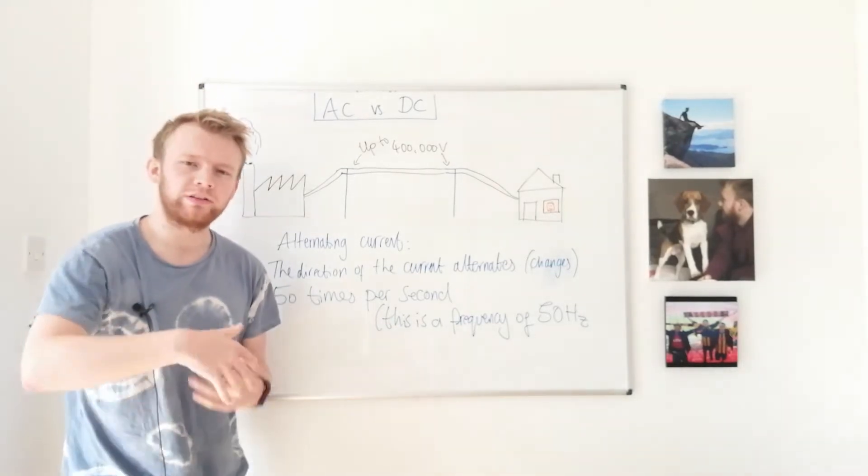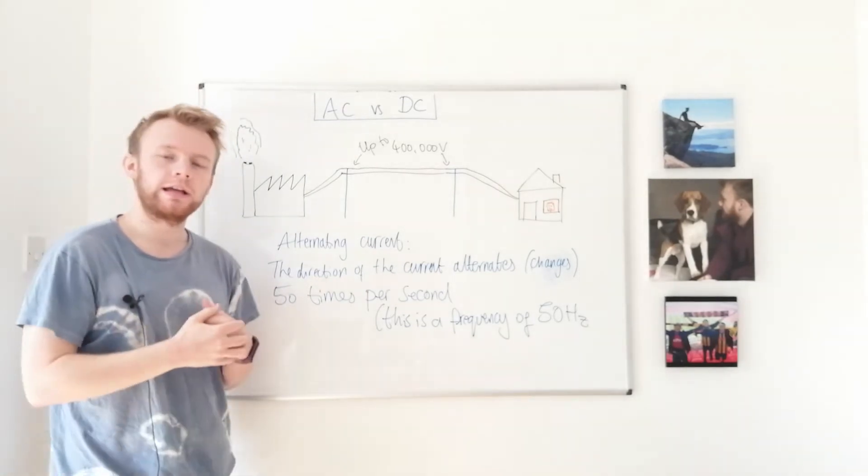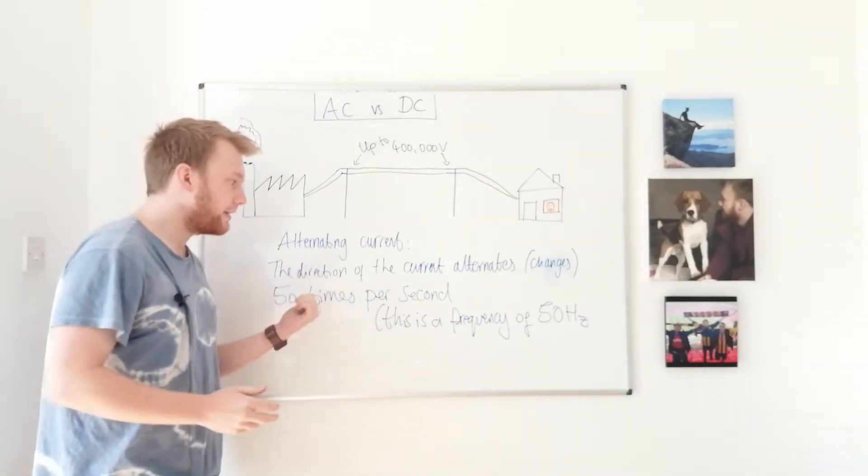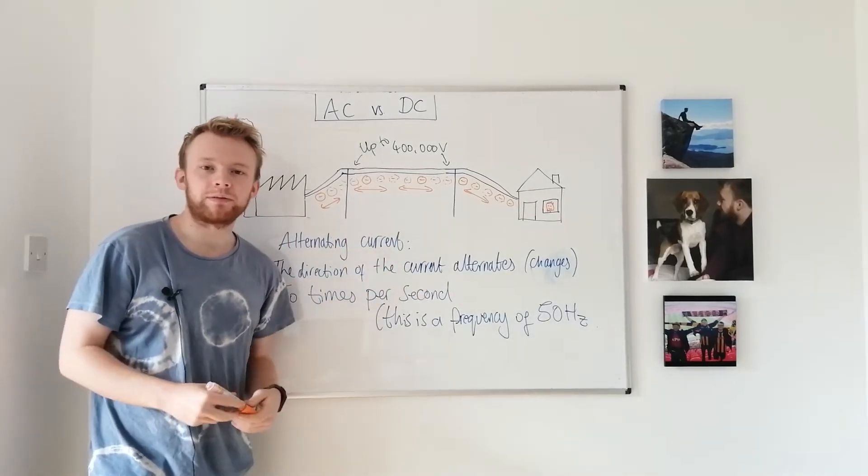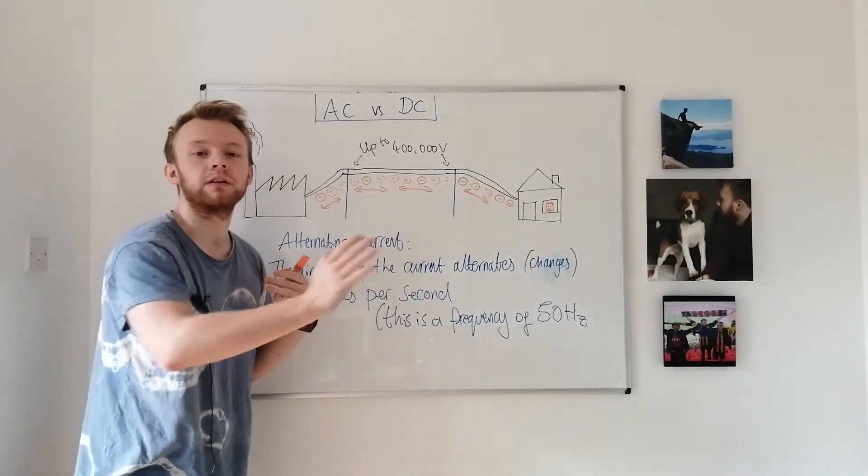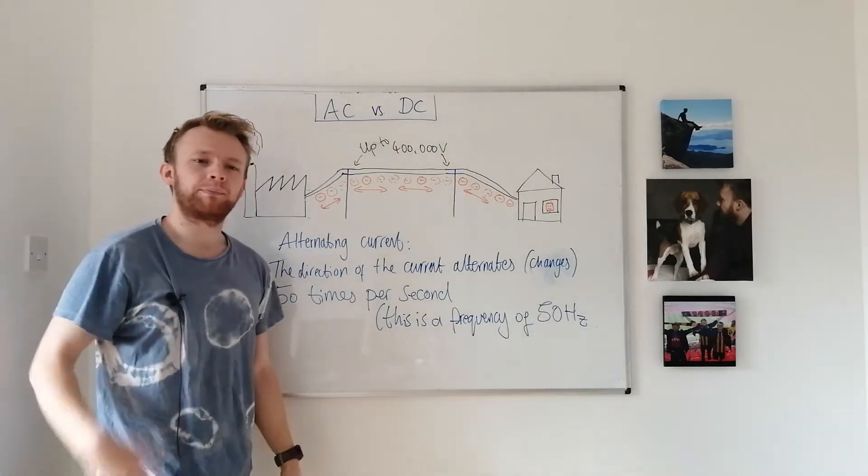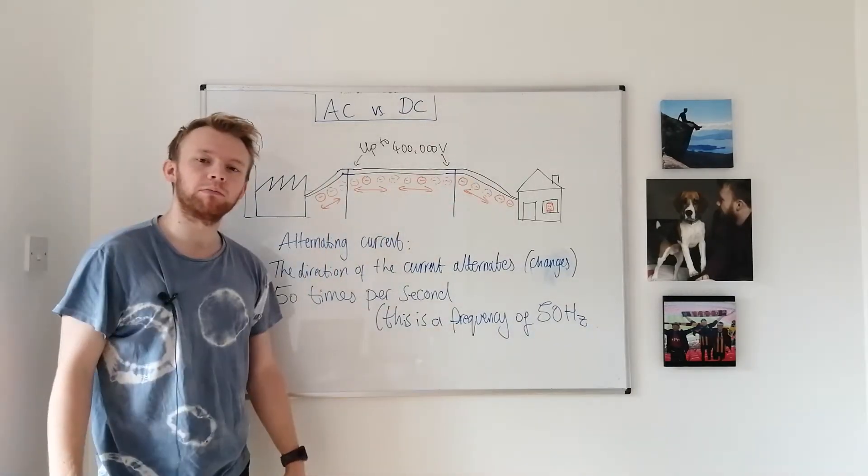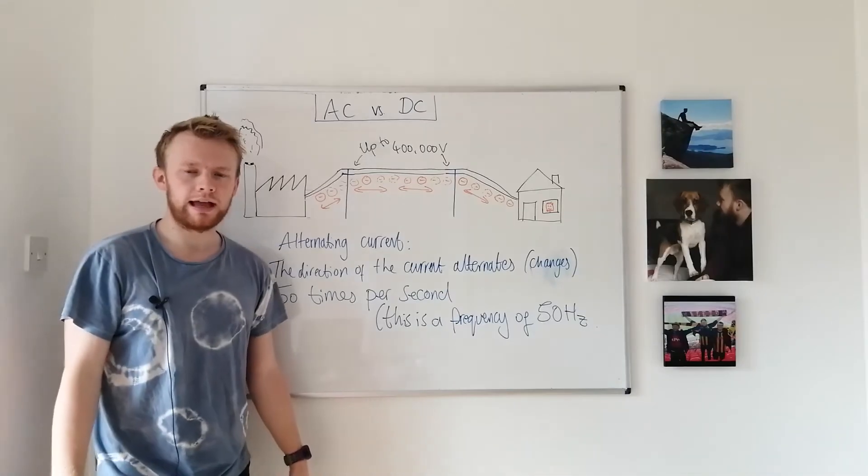Alternating current means that the direction of the current is constantly changing. In fact it changes 50 times every single second. So we can say that it has a frequency of 50 hertz. In moving backwards and forwards 50 times every second the electrons bump into one another and pass on the electrical energy along the circuit and back to the power station. This is a bit like a game of tag or a game of dominoes where you push one and the rest all tumble. So even though the electrons aren't flowing in one direction they can still pass on electrical energy this way.